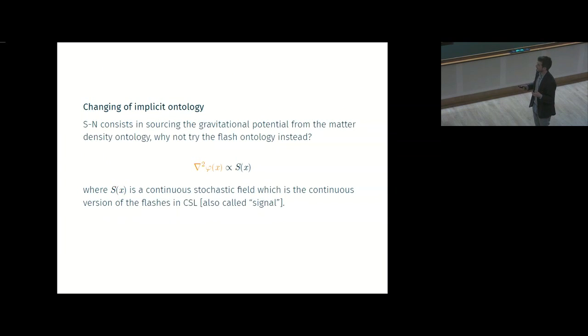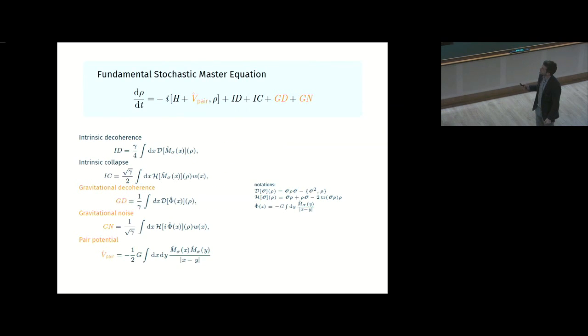If you do that, and then of course you crank up the theory, you do your computations, and fortunately you can write exact equation for matter. So you get an explicit stochastic master equation for matter. You have to be brief on this, but essentially the first two terms are intrinsic decoherence and intrinsic collapse that come from the collapse model you've put in. Nothing new. This is trivial. This is just what I put in my theory first. But the coupling with gravity gives you an additional gravitational decoherence, an additional gravitational noise, and an additional pair potential.